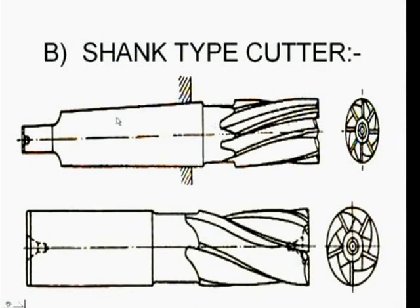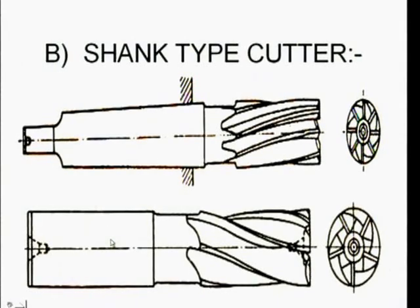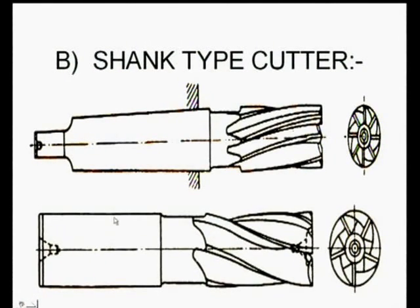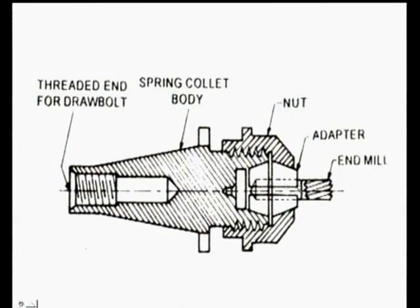Shank type cutters are of basically two types: taper shank and straight shank. Usually end mills have such a shape — taper shank and parallel or straight shank — with cutting edges on the periphery as well as on the front end. For fixing them in the spindle, an end mill is fixed in an adapter, which is fixed in a spring collet body connected to the spindle by a threaded draw bolt, with a nut for fixing the adapter.